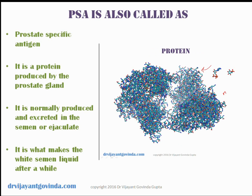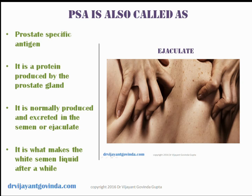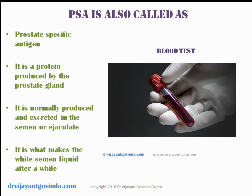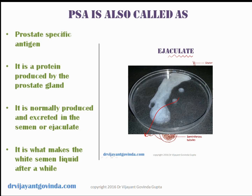A protein is an organic molecule composed of many different varieties of chemicals, especially carbon and nitrogen, and has a lot of different functions in the body. PSA is normally produced and excreted in the semen. Have you wondered why the white liquid semen becomes completely transparent after a while? It is PSA that is supposed to break down this white semen into a clear liquid, allowing sperms to travel and provide fertility to men.